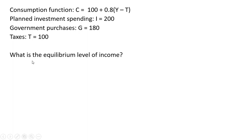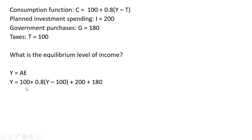We want to find the equilibrium level of income. In equilibrium, income equals planned aggregate expenditures. Planned aggregate expenditures are going to be the consumption function plus investment spending plus government purchases.